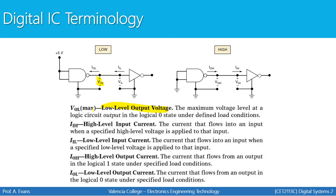So those are our four voltage concepts: low level output voltage, high level output voltage, low level input voltage, and high level input voltage. We have the same four ideas related to current: high level input current, low level input current, high level output current, and low level output current. These values represent the same idea we discussed with voltages — they describe the current that flows into or from an input or output when a specified high or low voltage is applied.